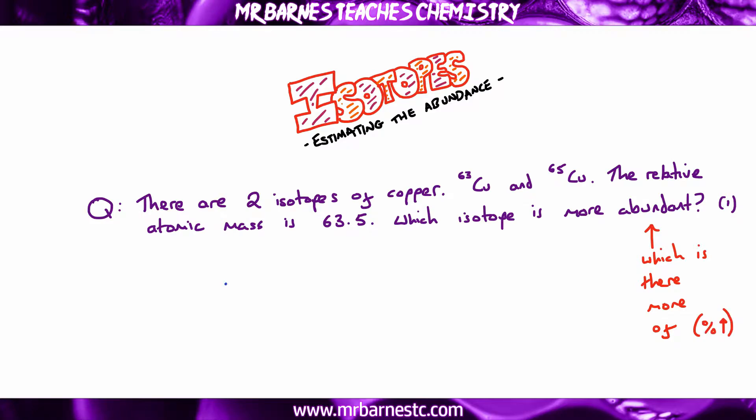Now to be able to answer that, what I always do is write out the mass of my two isotopes and draw a line in between. I'm going to put halfway in, which is 64 in this instance, and then I'm going to write on that line approximately where my actual relative atomic mass is, which is 63.5. Now all you need to do to work out which is more abundant is find out which one your relative atomic mass is nearest to, 63 or 65. And as you can see, it's closest to 63. Therefore, copper 63 is more abundant. It's as simple as that.